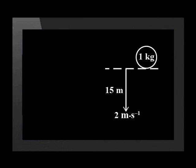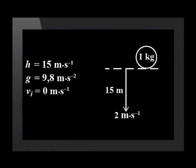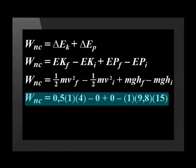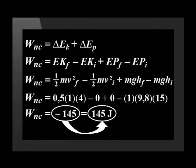Now let's complete the example. We have been given the height of 15 meters, gravitational acceleration of 9.8 m/s², initial velocity as zero, and final velocity as 2 meters per second. By substituting correctly into the formula, the correct answer is -145 joules. We must not leave the answer without noting that work is a scalar and therefore no direction is given.